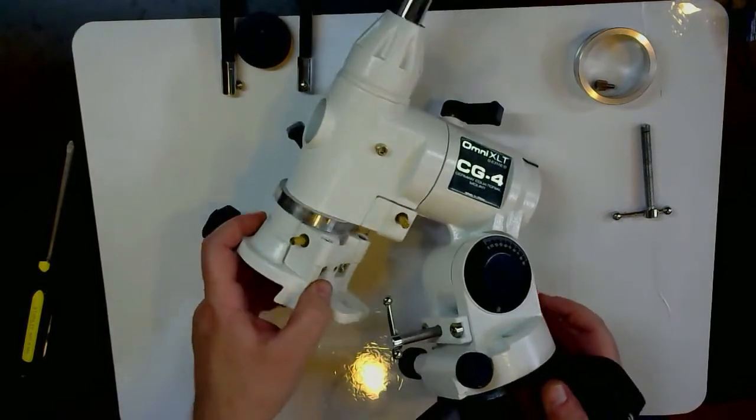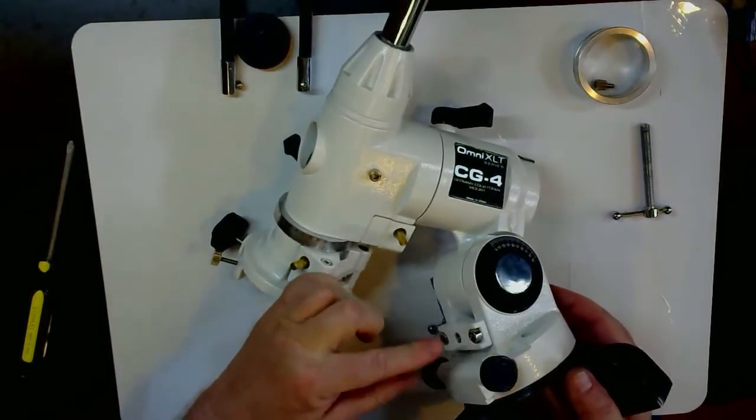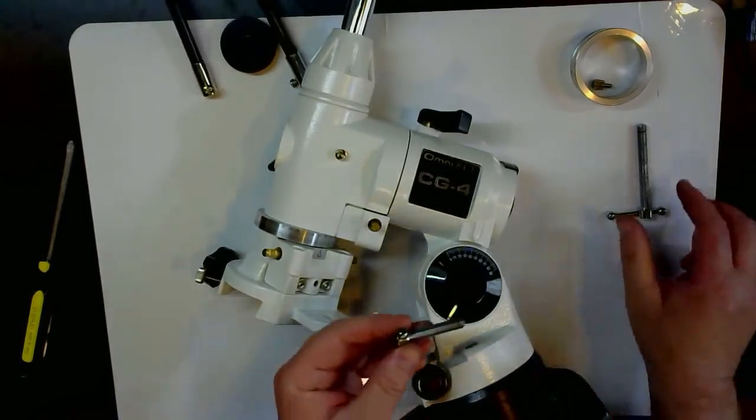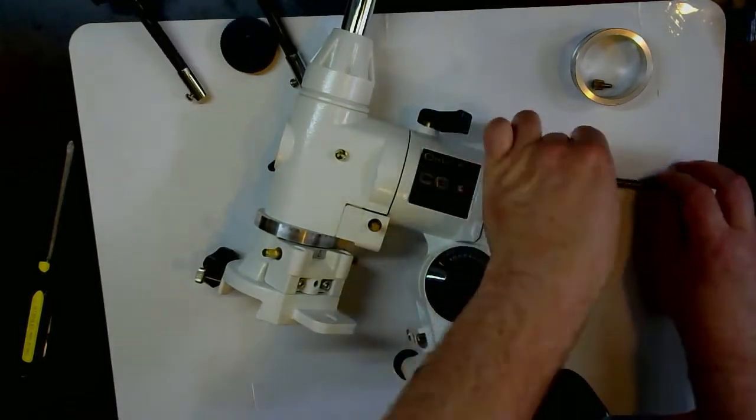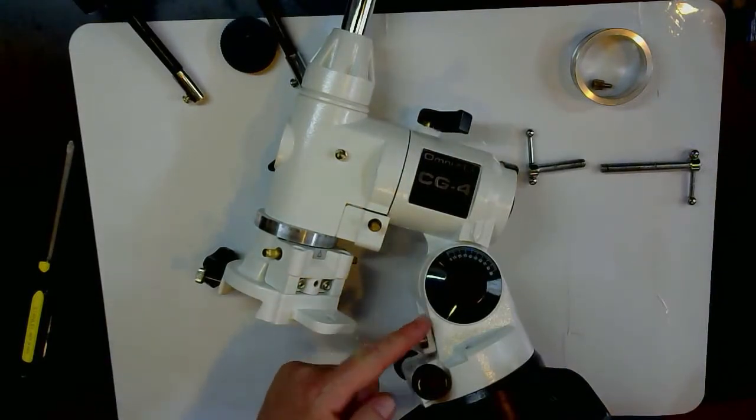You can see these are quite long, very long. There you go - there's a shorter one and a longer one. The shorter one goes on the side of these knobs.